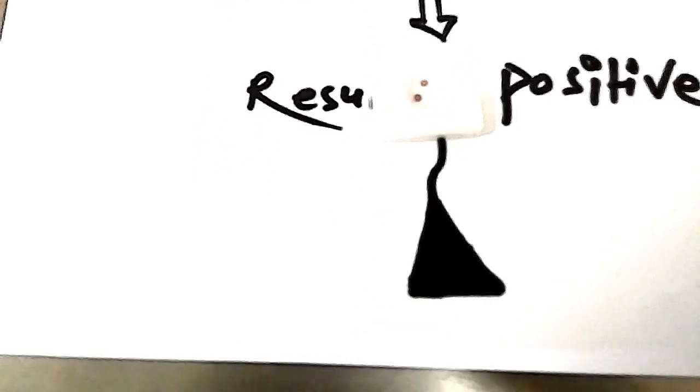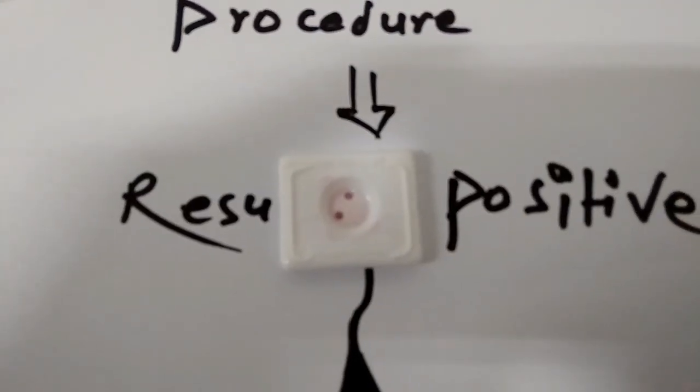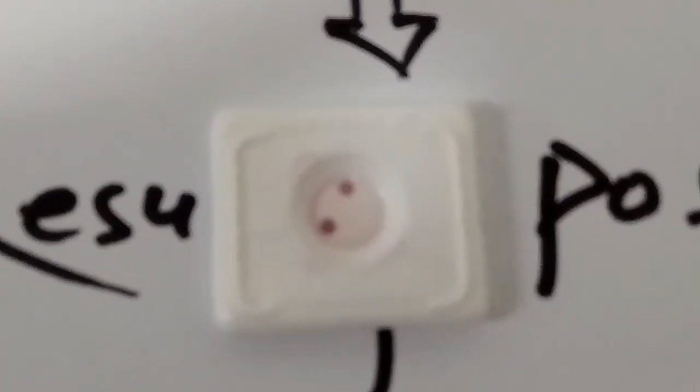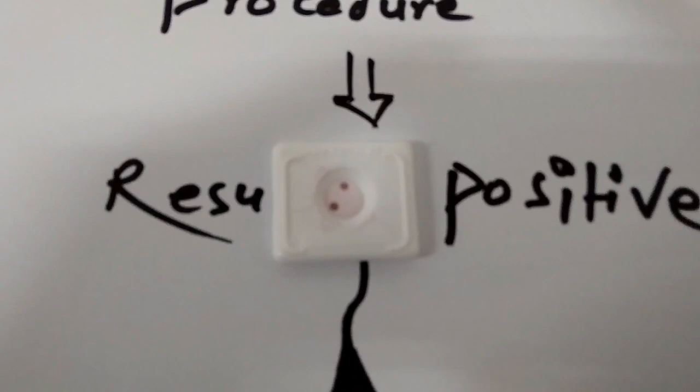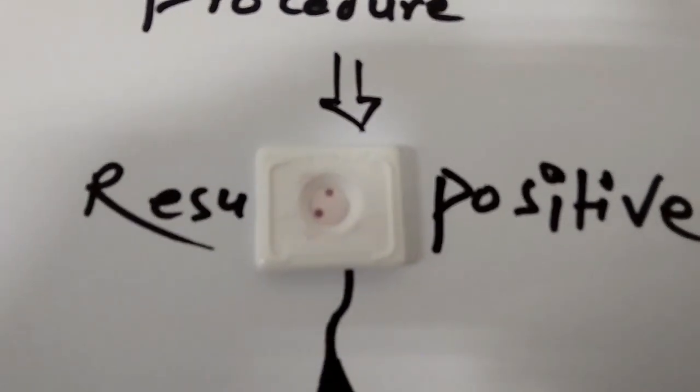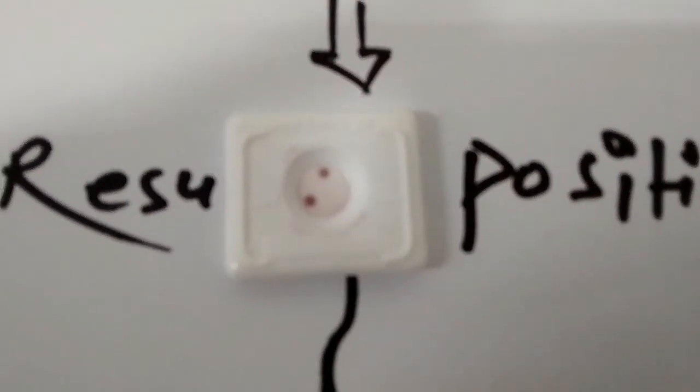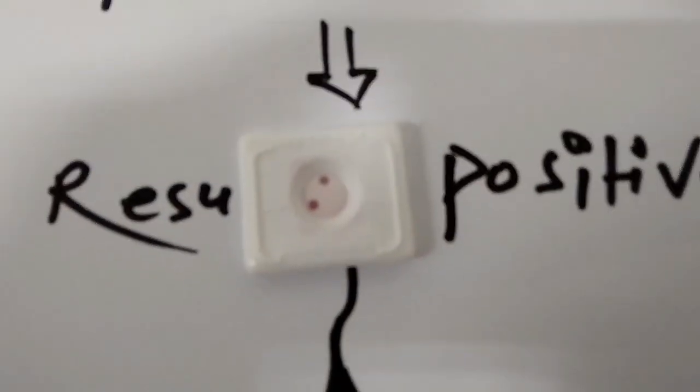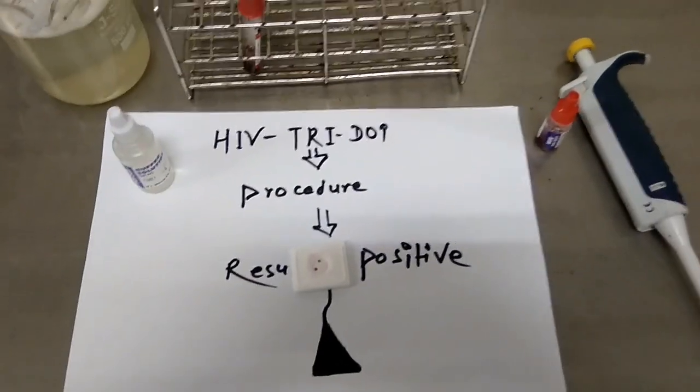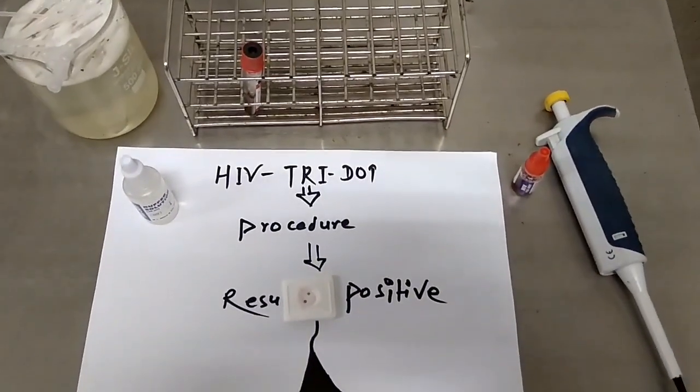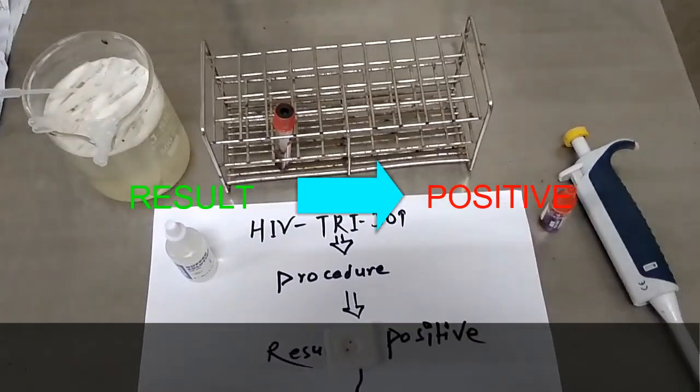Here you can see two pink dots: one is the control region and one is the T1 region. The test result is positive.